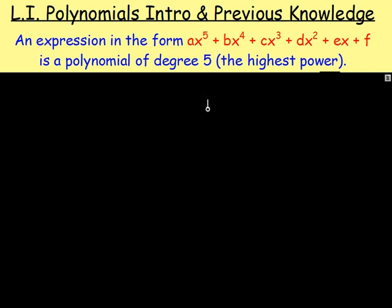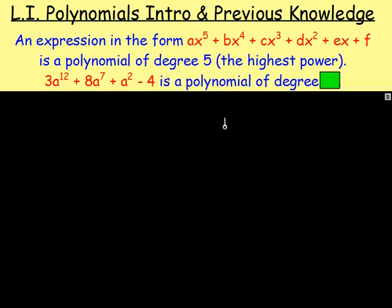You do not have to include every single power though. You could have this. This is also a polynomial and that one is going to be of degree 12, because 12 is the highest power. You can see here I've got 3a to the power of 12, add 8, a to the power of 7, add a squared, minus 4. So we've not got every single power there but it's still going to be a polynomial.